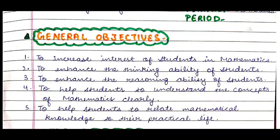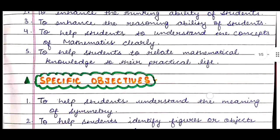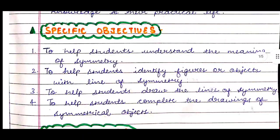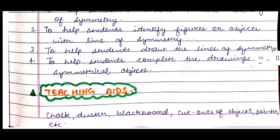Fifth: to help students relate mathematical knowledge to their practical life. After that come specific objectives, which are related to the topic — symmetry. First: to help students understand the meaning of symmetry. Second: to help students identify figures or objects with lines of symmetry. Third: to help students draw the lines of symmetry. Fourth: to help students complete the drawings of symmetrical objects.